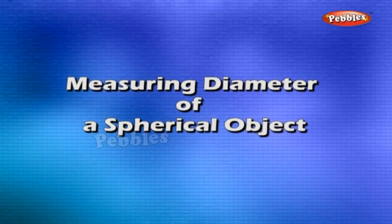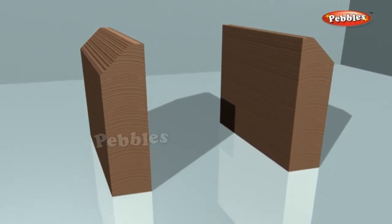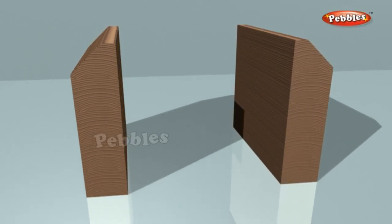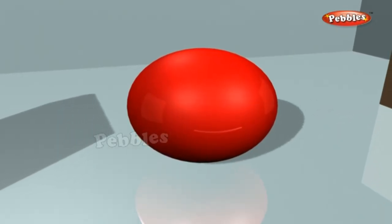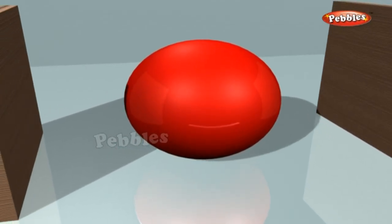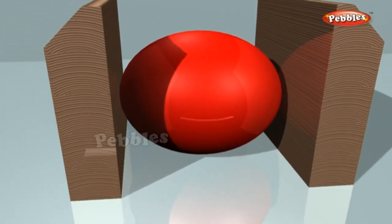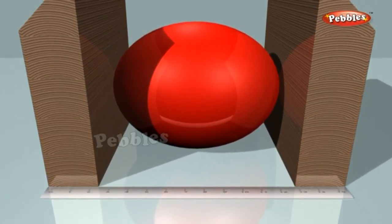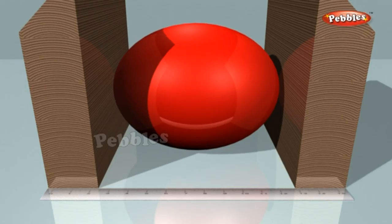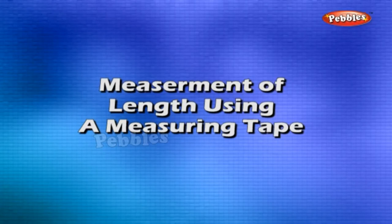Measuring diameter of a spherical object. Measure the diameter of a ball by using a pair of blocks. Place a ball on the table. Bring two wooden blocks such that both of these touch the ball and their lower edges are along a meter scale as shown in figure. Measure the distance between the faces of the block touching the ball.